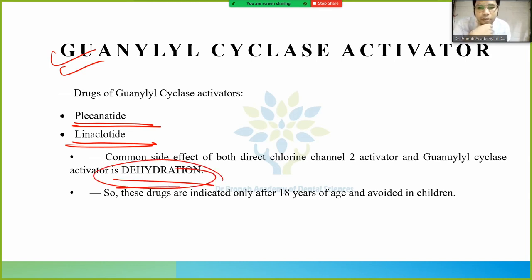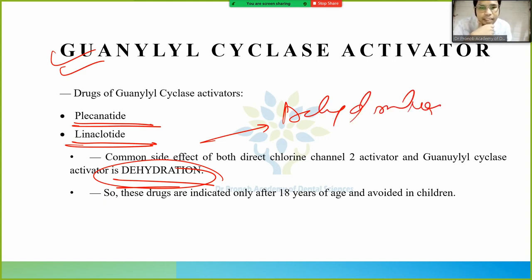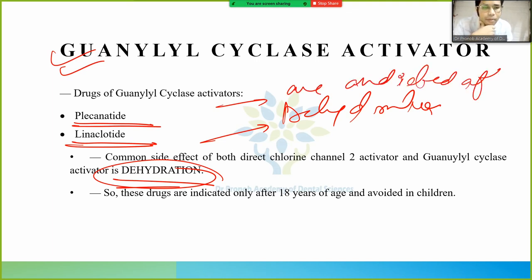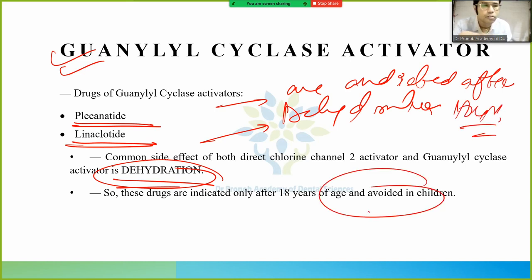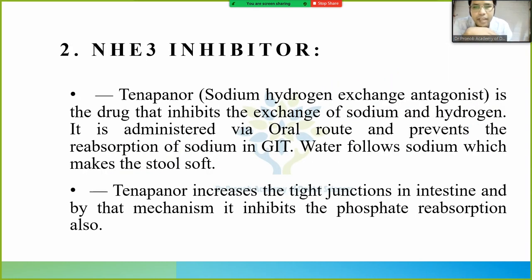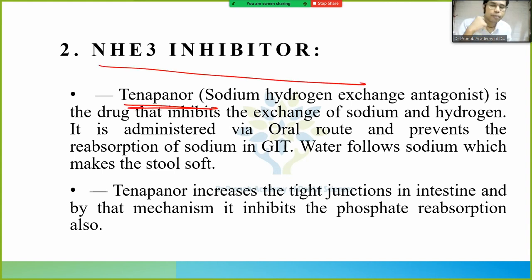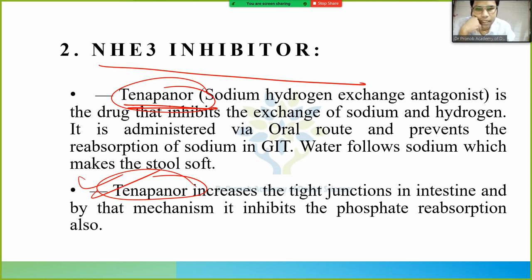The side effect of guanylate cyclase activators is dehydration. These are indicated only in patients above 18 years of age and are avoided in children. There is also the NHE3 inhibitor — tenapanor — which is less important but the name should be remembered.